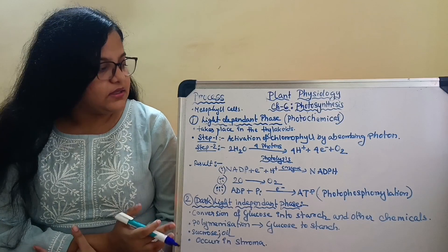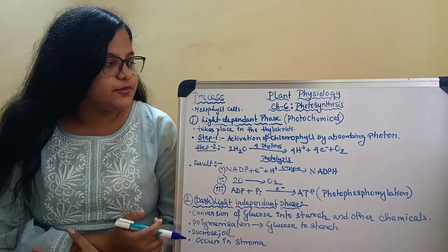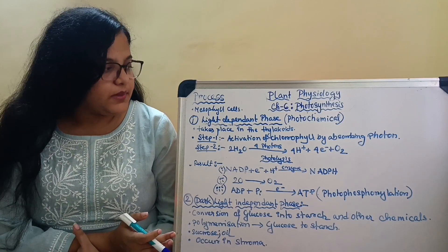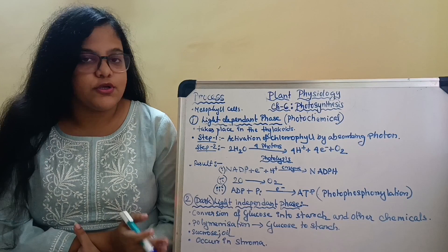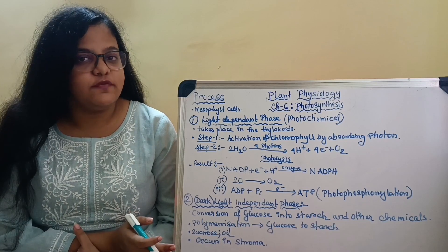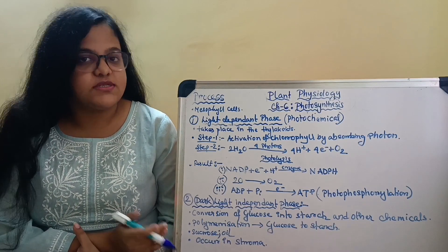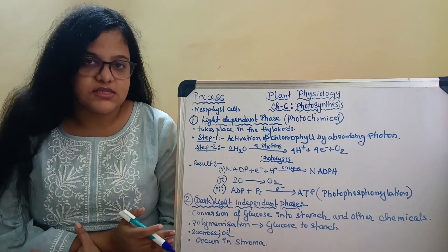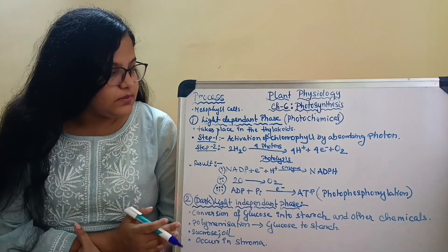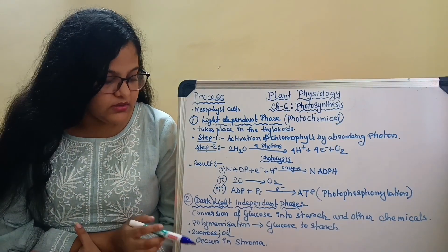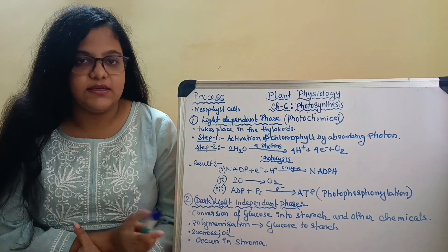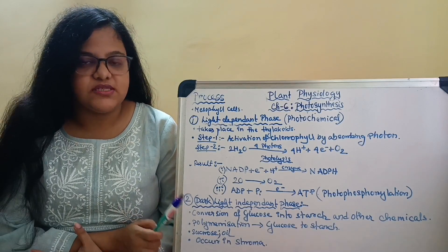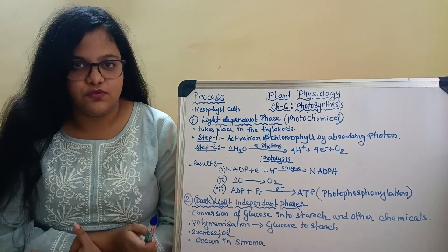We have learned that glucose is produced as a result of photosynthesis, but what are the processes involved? What is the mechanism of the chlorophyll system? We will discuss that. But before jumping into that, know one thing: excess sunlight will always destroy chlorophyll.